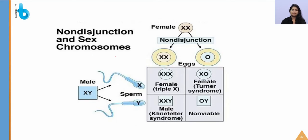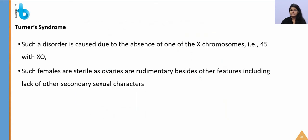Non-disjunction of sex chromosomes — failure of separation during cytokinesis — results in Klinefelter syndrome (when two X chromosomes end up in one egg) and Turner syndrome. Turner syndrome is seen in females with only 45 chromosomes (XO) — only one X chromosome instead of two. Such females are sterile, with rudimentary ovaries and lack of secondary sexual characters.